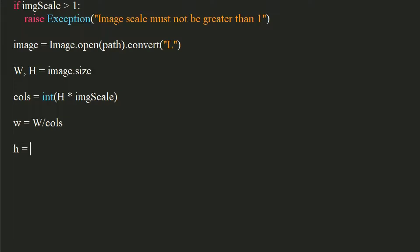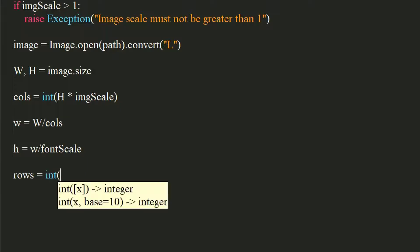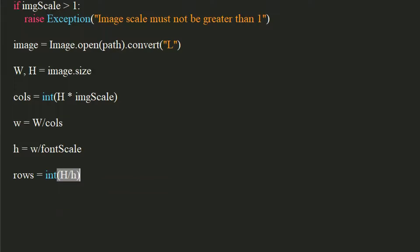The height of the tile would be its width divided by the font scale. The total number of rows would be the integer of the image's height divided by the tile's height. Now, declare an empty array which will hold each line of the ASCII art.